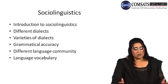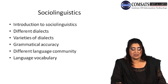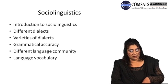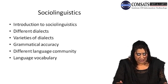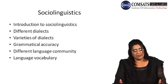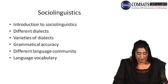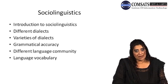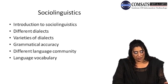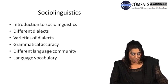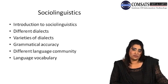Once again, I would like to go back to the introduction of Social Linguistics in which we are going to speak about different dialects, the varieties of dialects, grammatical accuracy, different language communities and language vocabulary. Social Linguistics is a study of language in relation to society, and how language is meant for society. There are major English journals also devoted to this. Social Linguistics basically throws light on both the nature of language and the nature of society.